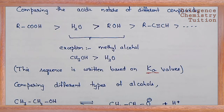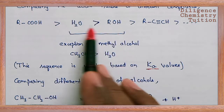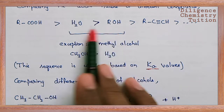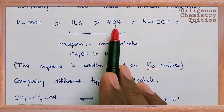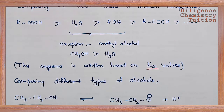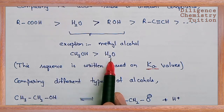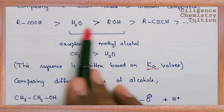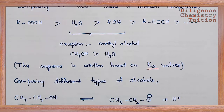Generally, alcohols are less acidic than water. However, there is an exceptional case: methyl alcohol. Any alcohol is less acidic than water, but methyl alcohol is more acidic than water. So methyl alcohol is the exception — it is more acidic than water, while all remaining alcohols are less acidic than water.